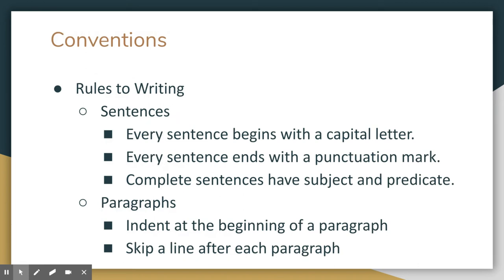Here are some of our other conventions, our rules for writing. So sentences: every sentence is beginning with a capital letter. Every sentence ends with a punctuation mark because a period is not always necessary. And complete sentences have a subject and a predicate. So that's very similar to like a noun and a verb. And we will talk about those as one of our first lessons. Your paragraphs need to be indented at the beginning of each paragraph and you should be skipping a line after each paragraph. So you have to hit that enter button on your keyboard.